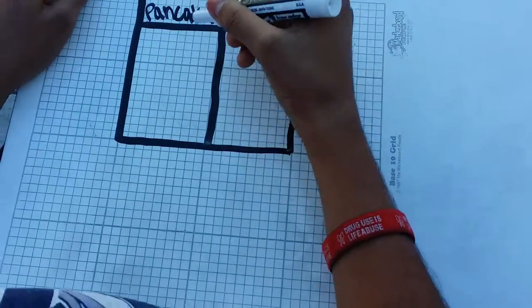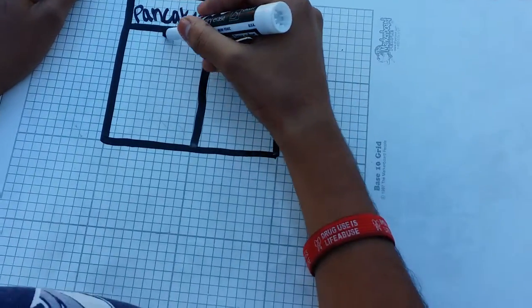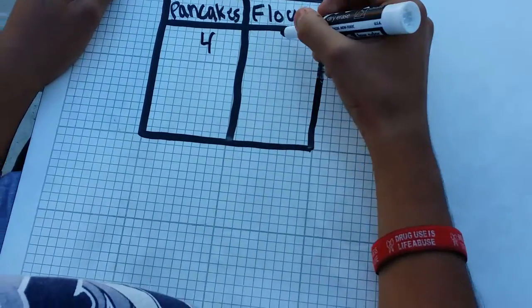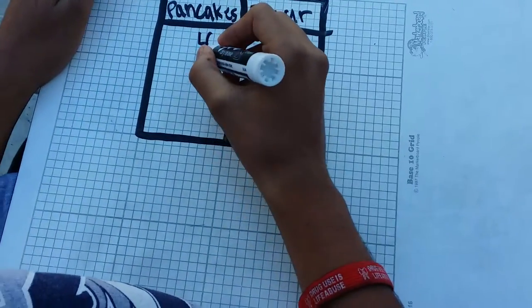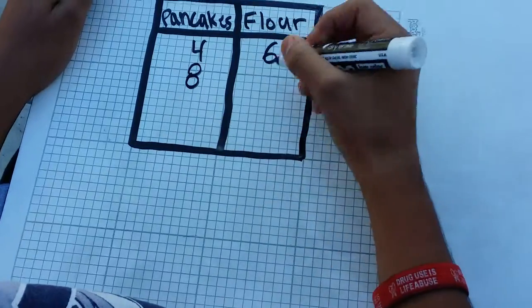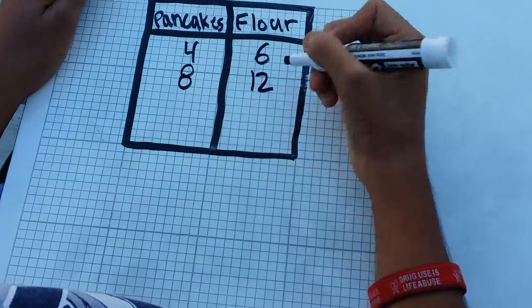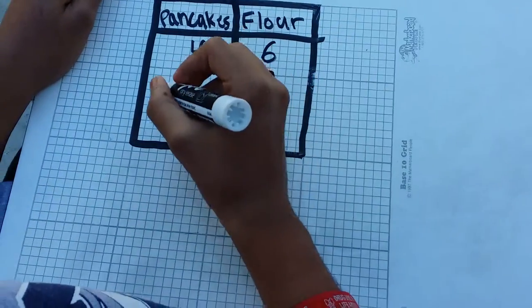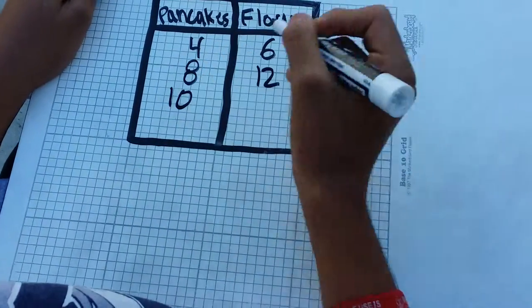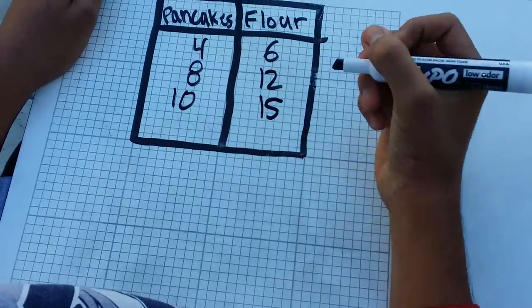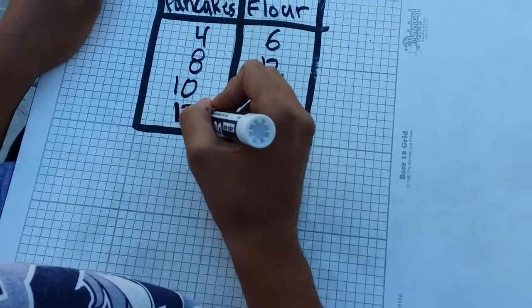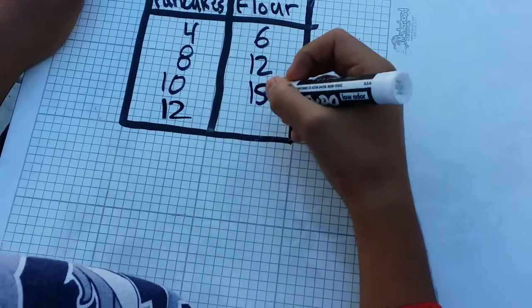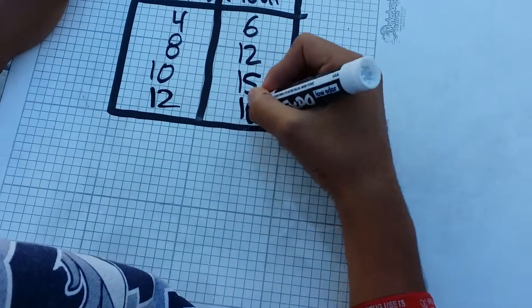I'm going to draw a table. For 4 pancakes, you need 6 tablespoons. For 8 pancakes, you need 12. For 10 pancakes, you need 15. And for 12 pancakes, you need 18.